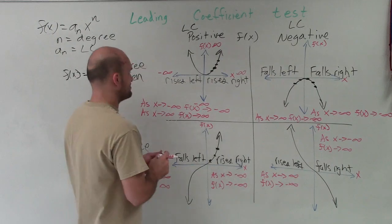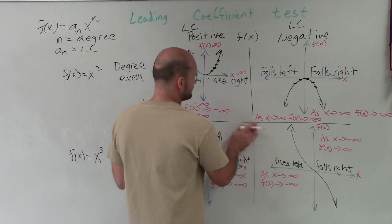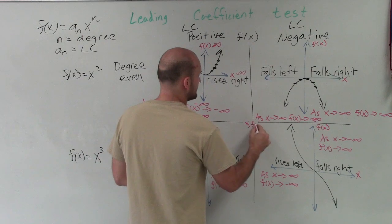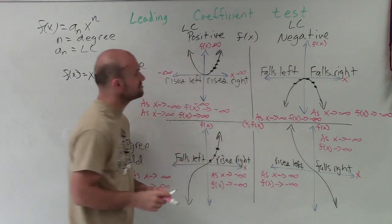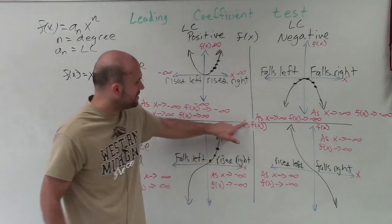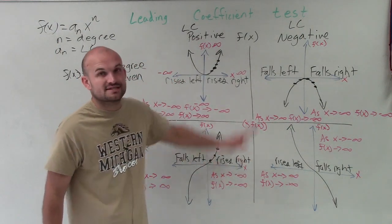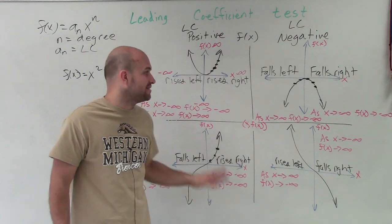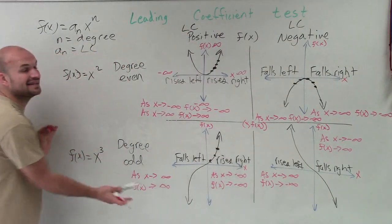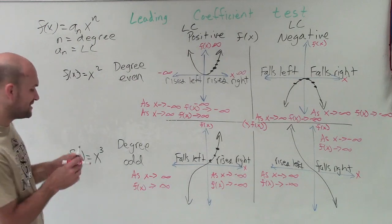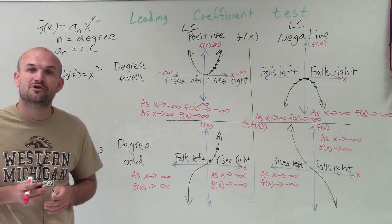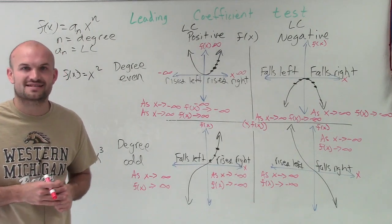All of this stems from the coordinate point of x and f of x. What I'm trying to represent is that as my points go to positive infinity, f of x will go to either positive or negative infinity. I know it's a lot to take in, but hopefully you can write this down, remember it, study it, and have a better idea of how to apply the leading coefficient test. Thanks.